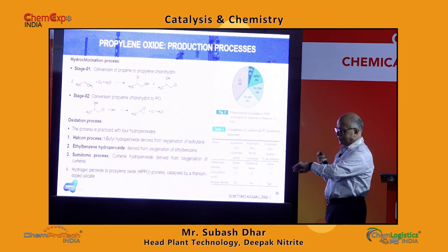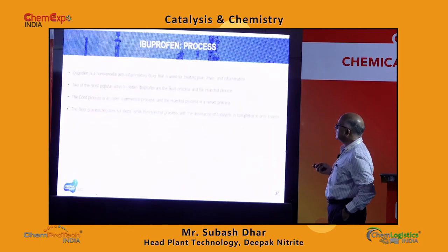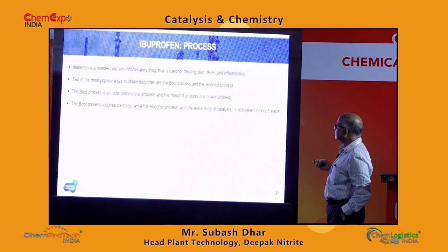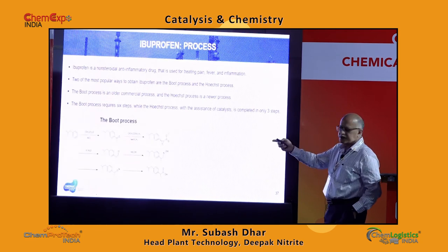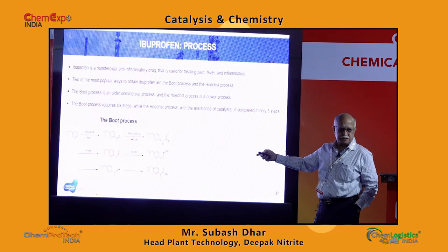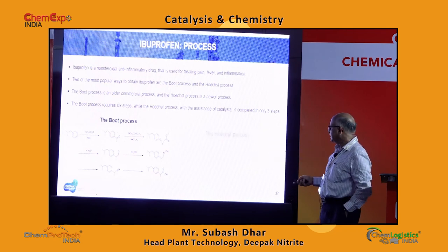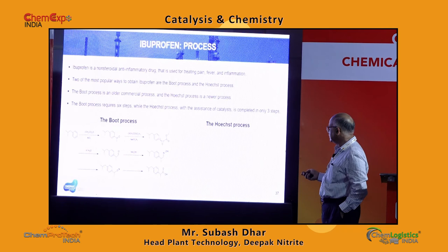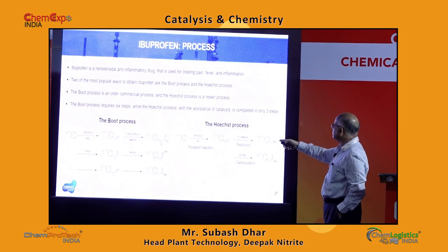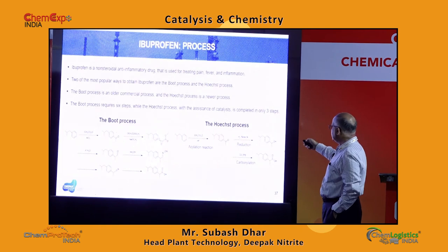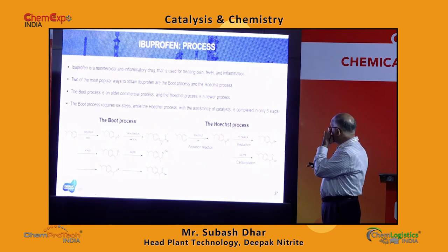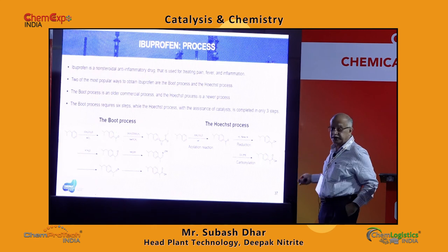For ibuprofen, there is an old multi-step Boots process, and then the more efficient Hoechst (Hex) process: acylation, then reduction, then carbonylation — producing ibuprofen in just three steps.